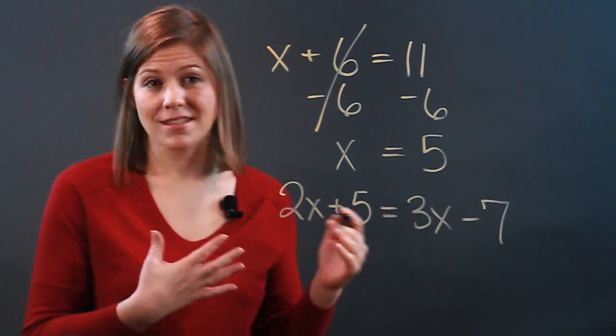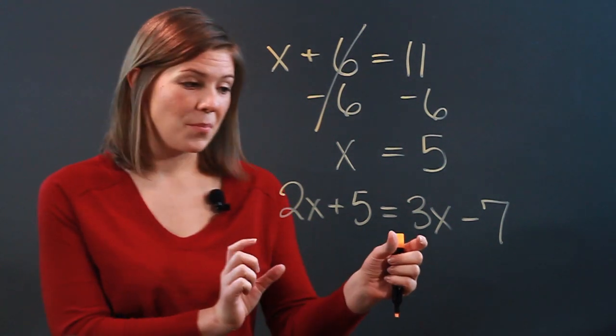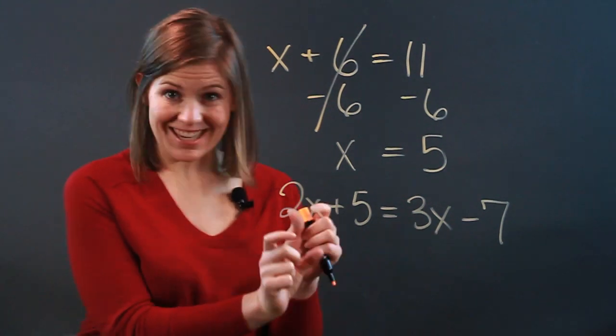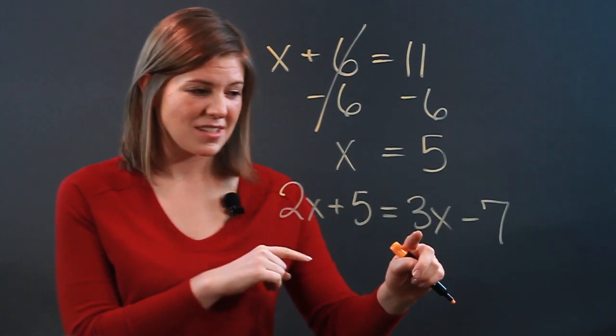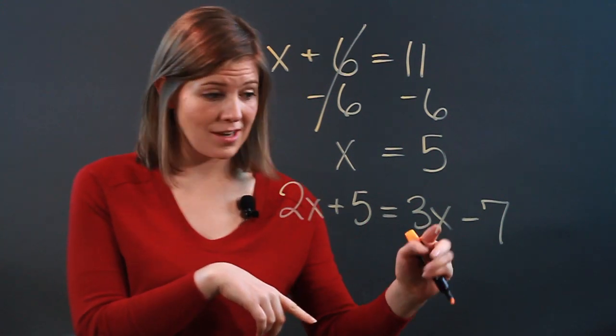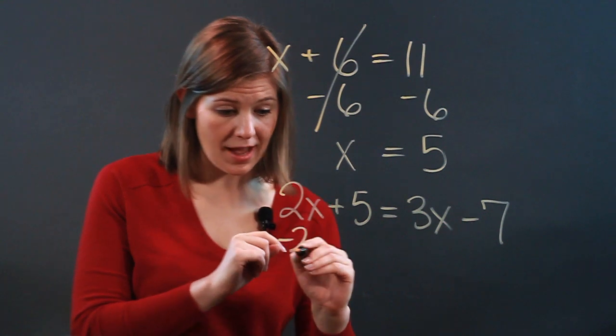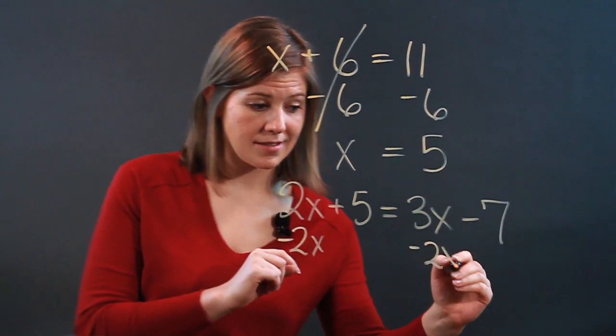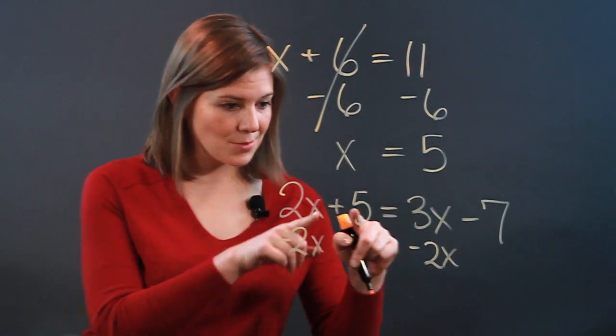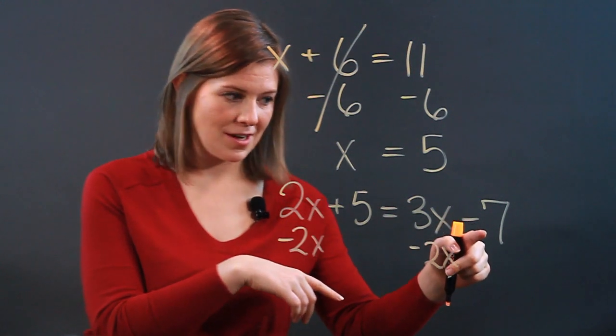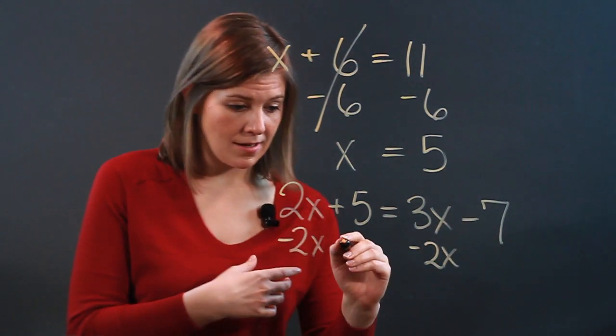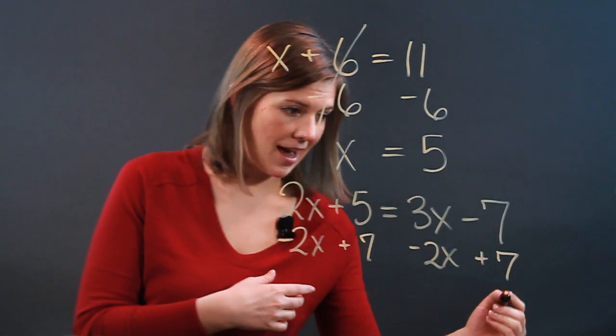You're going to deal with that by doing the same work, but by trying to put like factors together. So our x's want to come together, and since this one is more positive, we've got 3x over here, I'm going to subtract this 2x from both sides. Fantastic. And since we have 5 over here and a negative 7 over here, why don't I just add 7 to both sides?